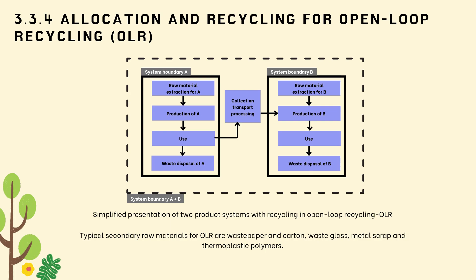Well-developed collecting systems and applications exist for these secondary raw materials. For instance, in Germany newsprint and cardboard are produced from waste paper or waste carton. Nevertheless, it is rarely known into which specific product the secondary raw material from the examined system is integrated. System expansion in these cases is not feasible or only possible with very uncertain assumptions, usually only when the product group is known.